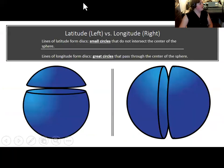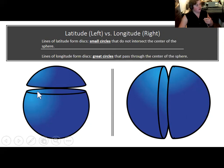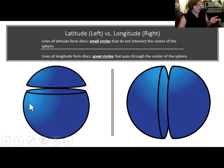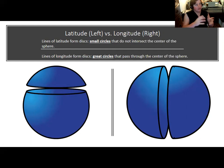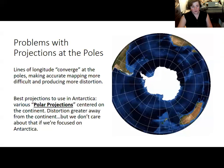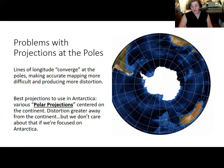Lines of latitude are geometric small circles — circles that don't pass through the center of the sphere. Lines of longitude form great circles, which all pass through the center of the sphere, like the way an orange is sliced. To make maps of Antarctica and get around these problems, mapmakers simply use a projection based at the South Pole rather than at the equator.